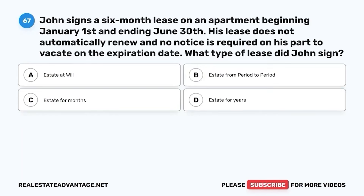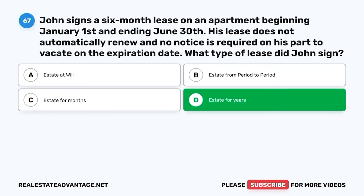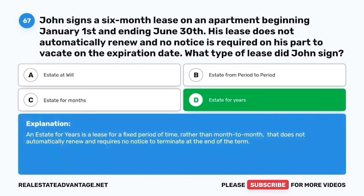Question 67. John signs a six-month lease on an apartment beginning January 1 and ending June 30. His lease does not automatically renew and no notice is required on his part to vacate on the expiration date. What type of lease did John sign? A. Estate at will. B. Estate from period to period. C. Estate for months. D. Estate for years. The correct answer is D. Estate for years. An estate for years is a lease for a fixed period of time, rather than month to month, that does not automatically renew and requires no notice to terminate at the end of the term.